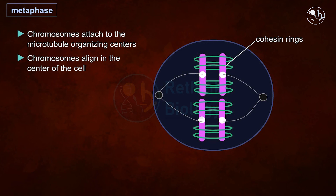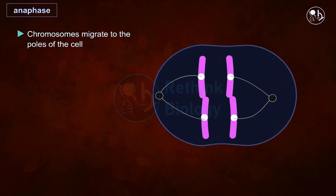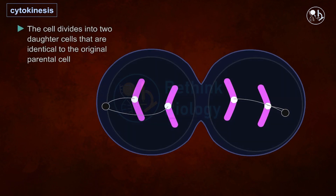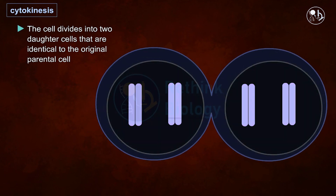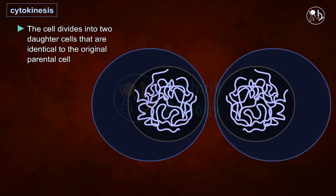In anaphase, the cohesions between the sister chromatids are lost, and those chromosomes start to migrate towards the opposite poles as microtubules pull them. Finally, in telophase, new nuclear envelopes start to appear and two nuclei form, each containing a full set of chromosomes. Telophase is the last stage of mitosis. The cell finally divides into two daughter cells that are identical to each other through the process of cytokinesis, and the two new daughter cells separate physically.